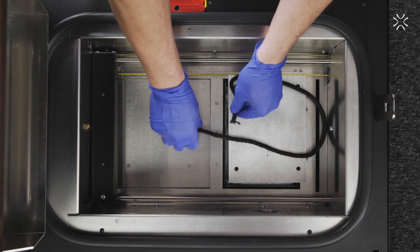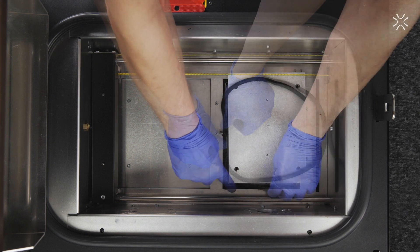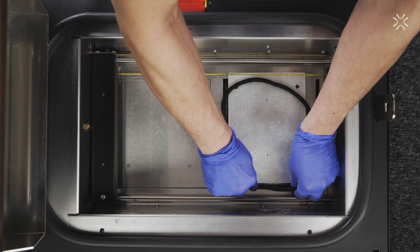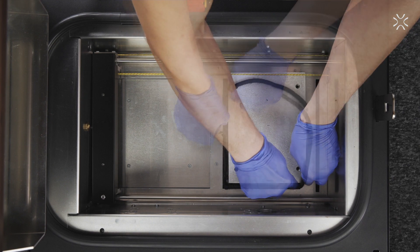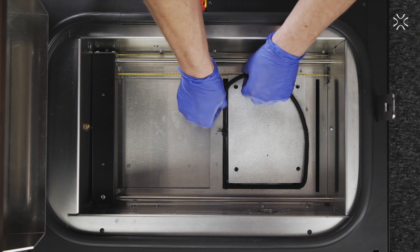The way of installing the third layer of the insulation is the same as the second layer, but it starts from the middle of the printer's chamber.